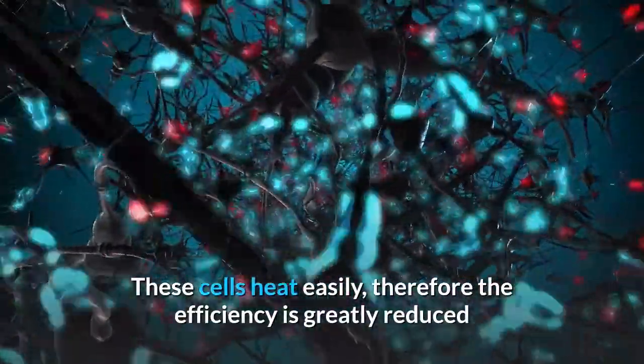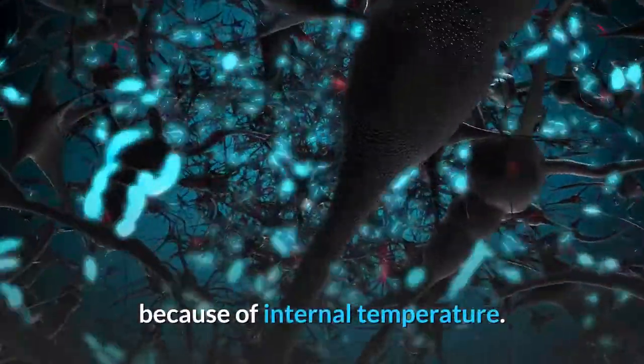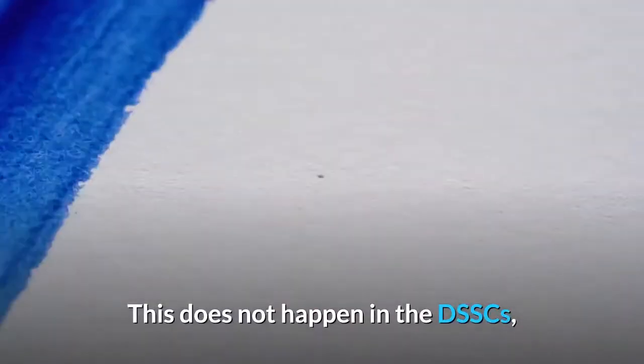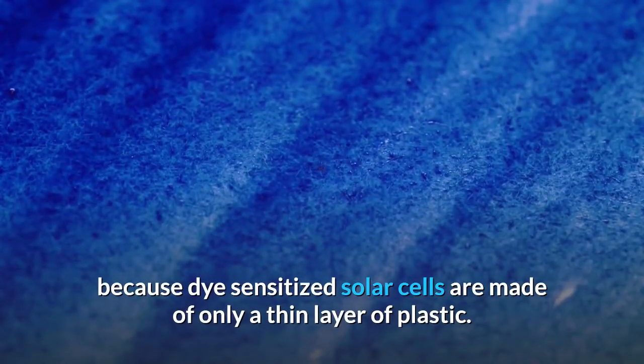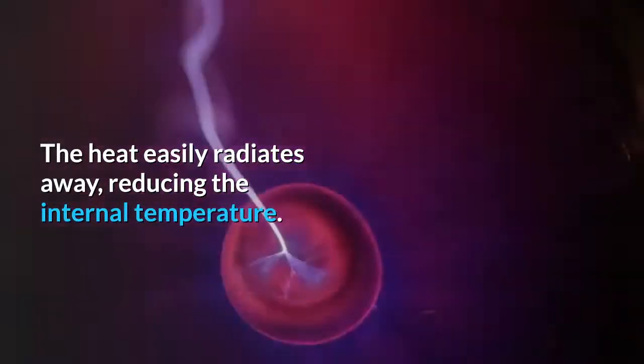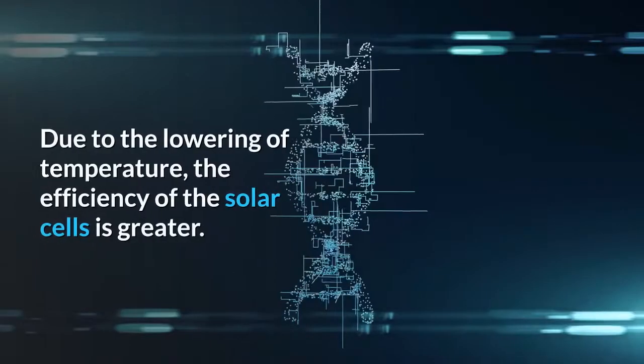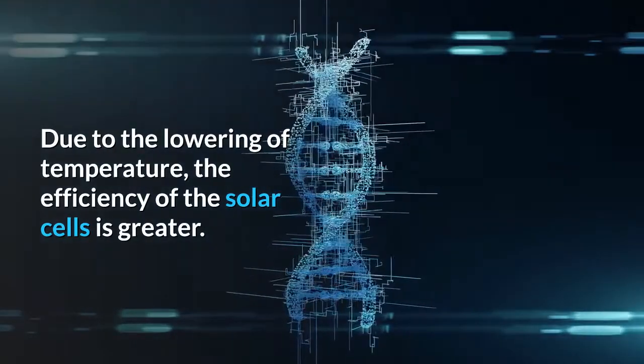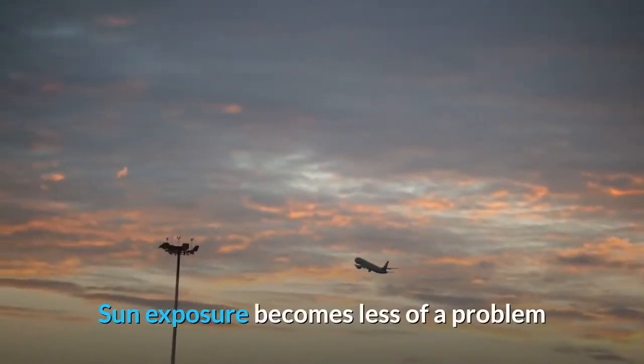This does not happen in the DSSCs because dye sensitized solar cells are made of only a thin layer of plastic. The heat easily radiates away, reducing the internal temperature. Due to the lowering of temperature, the efficiency of the solar cells is greater.